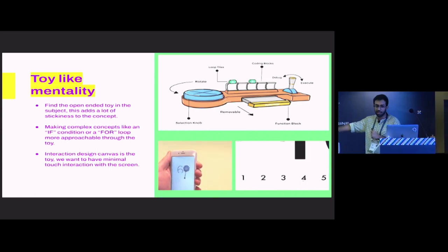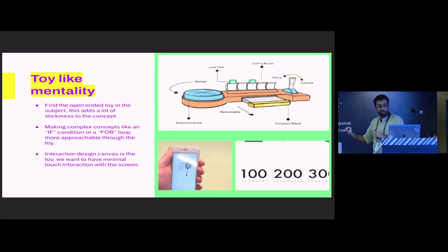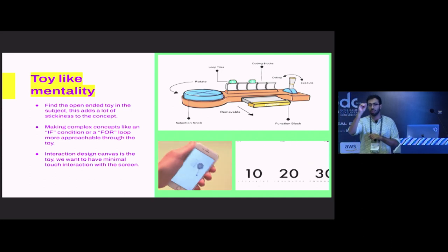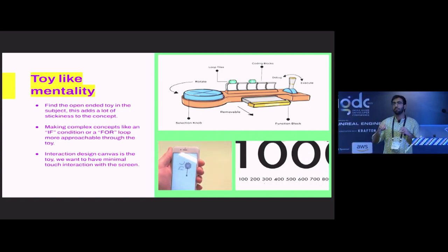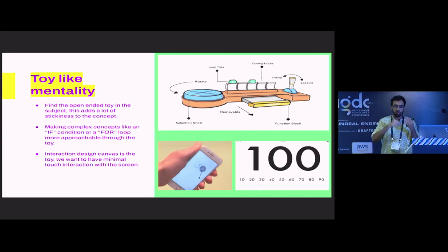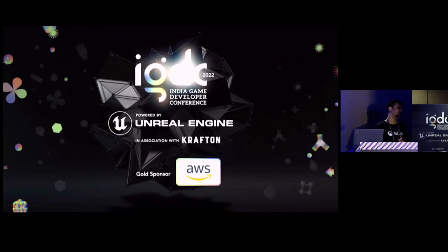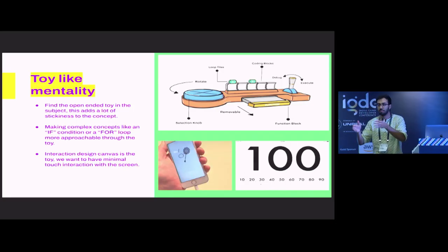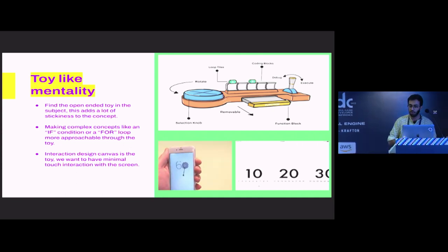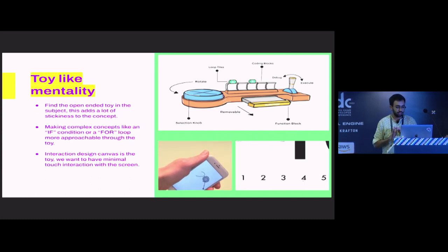What we try to do here is, for example, for the for loop, we wanted to have an interaction where you can actually rotate a knob. If you're rotating a knob, that kind of embodies the for loop. You don't have to exactly know what the for loop is doing, but through the physical action, you are trying to understand what the for loop is. That Mr. Miyagi concept, we go through muscle memory.